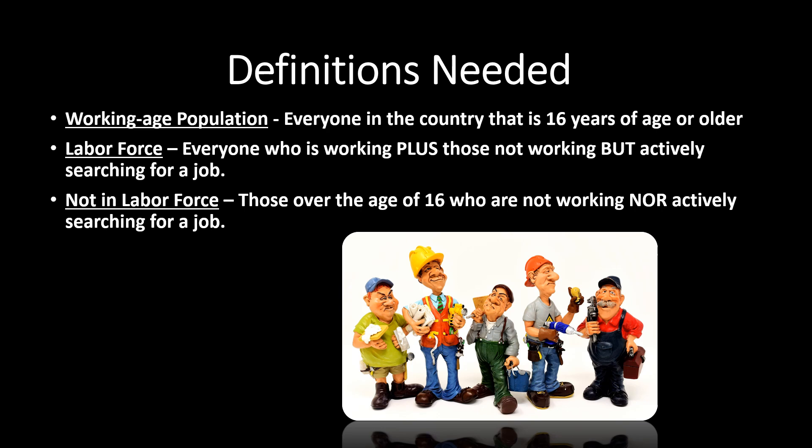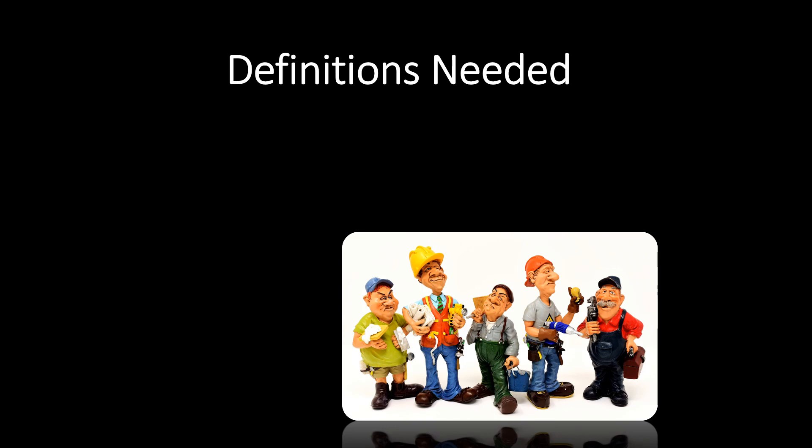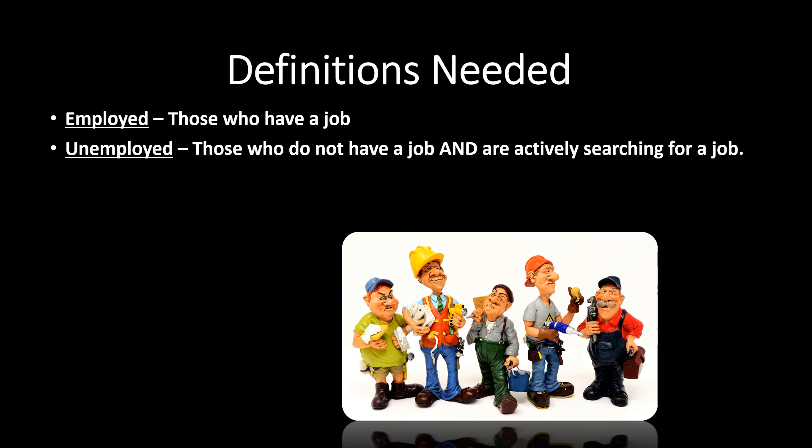This is very key. In order to be unemployed, you need to not have a job, and you also need to be actively searching for a job. Employed is pretty easy — it's just those that have a job. Whereas people who are unemployed are those that do not have a job and are actively searching for a job. By definition, when we're talking about someone who is officially unemployed, not only do they not have a job, but they also have to be actively searching for a job.